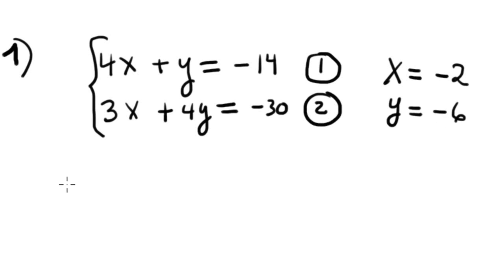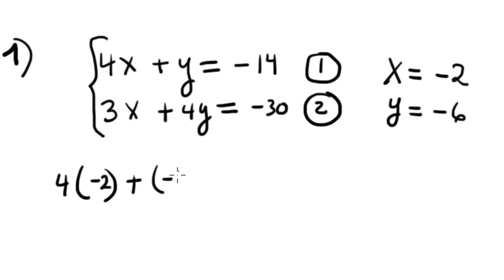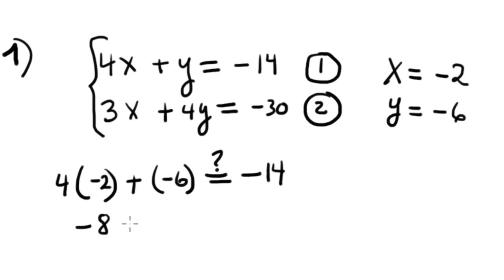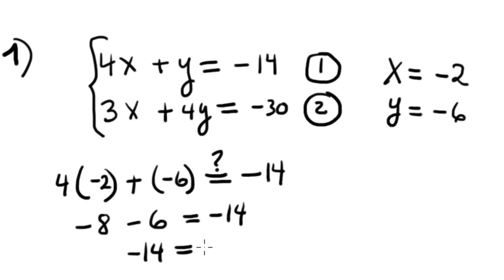Let me verify. For equation 1: 4 times negative 2 plus negative 6 should equal negative 14. This is negative 8, add negative 6, that equals negative 14. True — negative 14 equals negative 14.